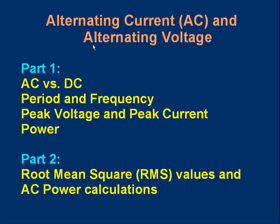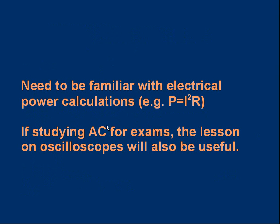Welcome to this lesson on alternating current (AC) and alternating voltage. We are splitting the lesson into two parts. In part one, we'll introduce alternating current and direct current, and make sure we understand period, frequency, peak voltage, and peak current, and start thinking about how to work out power. You should already be familiar with electrical power calculations for simple DC circuits — for example, P equals I squared R.